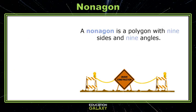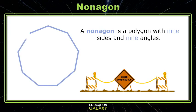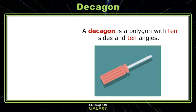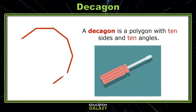A nonagon is a polygon with nine sides and nine angles. That's easy to remember — it almost sounds like it's a nine-agon. And a decagon is a polygon with ten sides and ten angles.